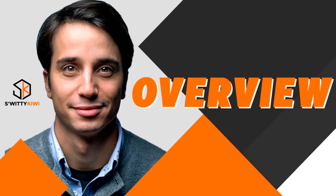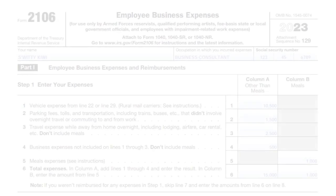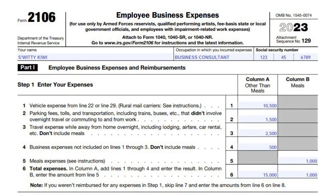Here's an overview of how Form 2106 looks. You put your name, your occupation in which you incurred expenses, and your social security number. In Part 1, line one covers vehicle expenses and parking fees, line two covers travel expenses while away from home overnight, and line three covers business expenses.